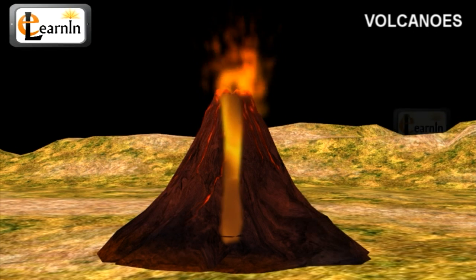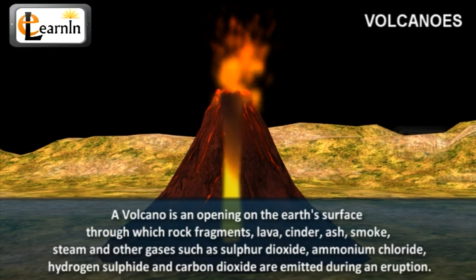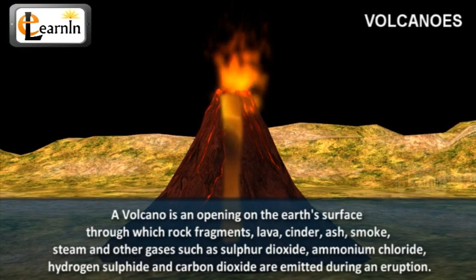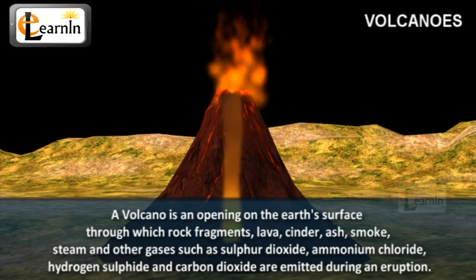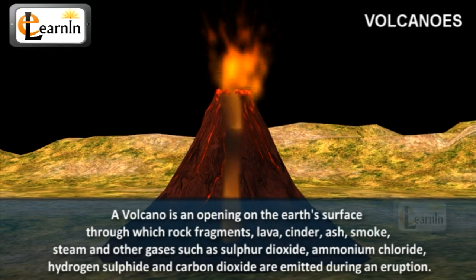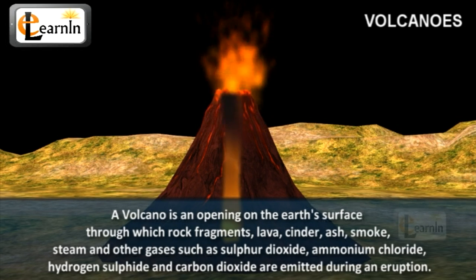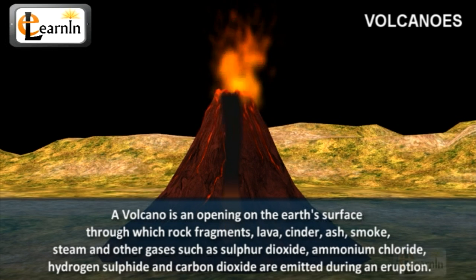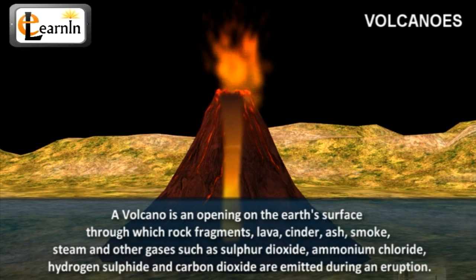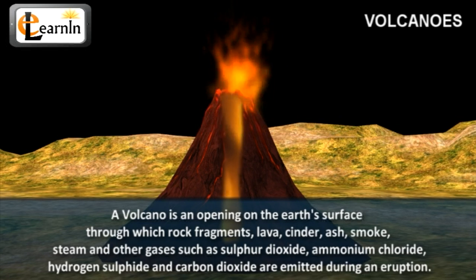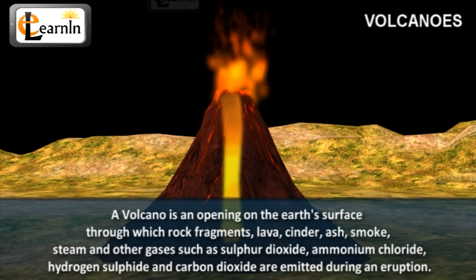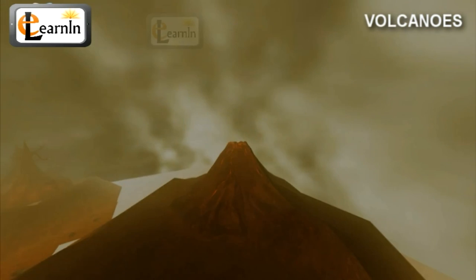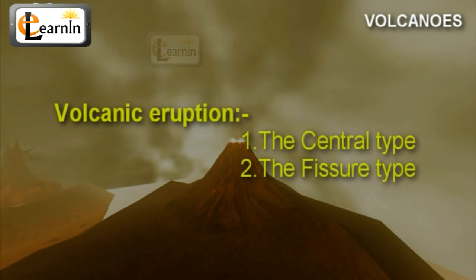This process is called vulcanicity. A volcano is an opening on the Earth's surface through which rock fragments, lava, cinder, ash, smoke, steam and other gases such as sulfur dioxide, ammonium chloride, hydrogen sulfide and carbon dioxide are emitted during an eruption. There are two types of volcanic eruption: the central type and the fissure type.